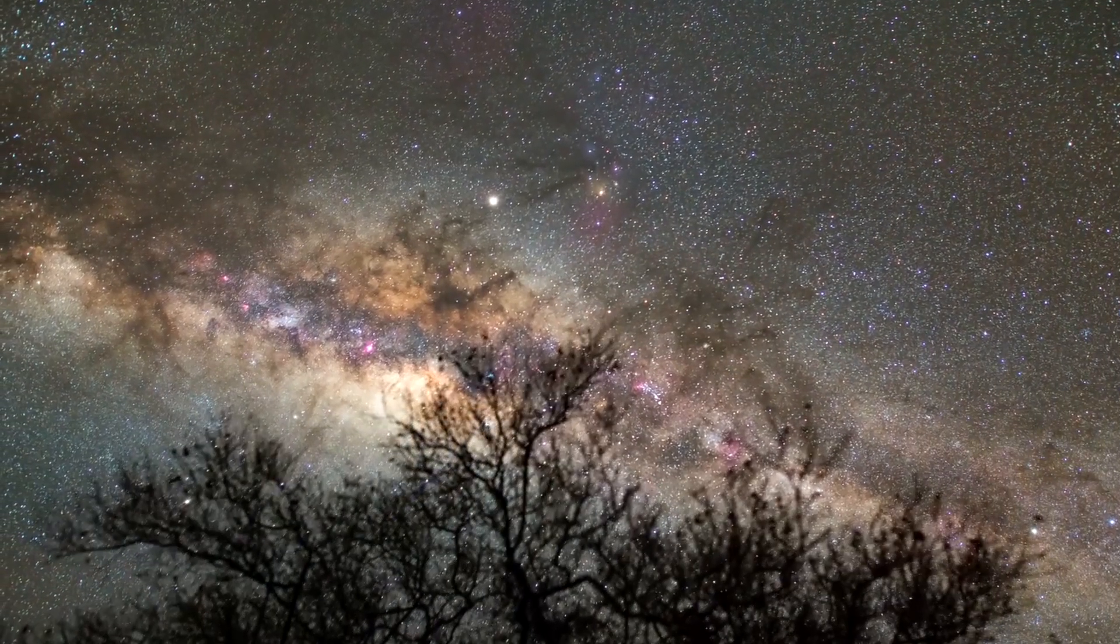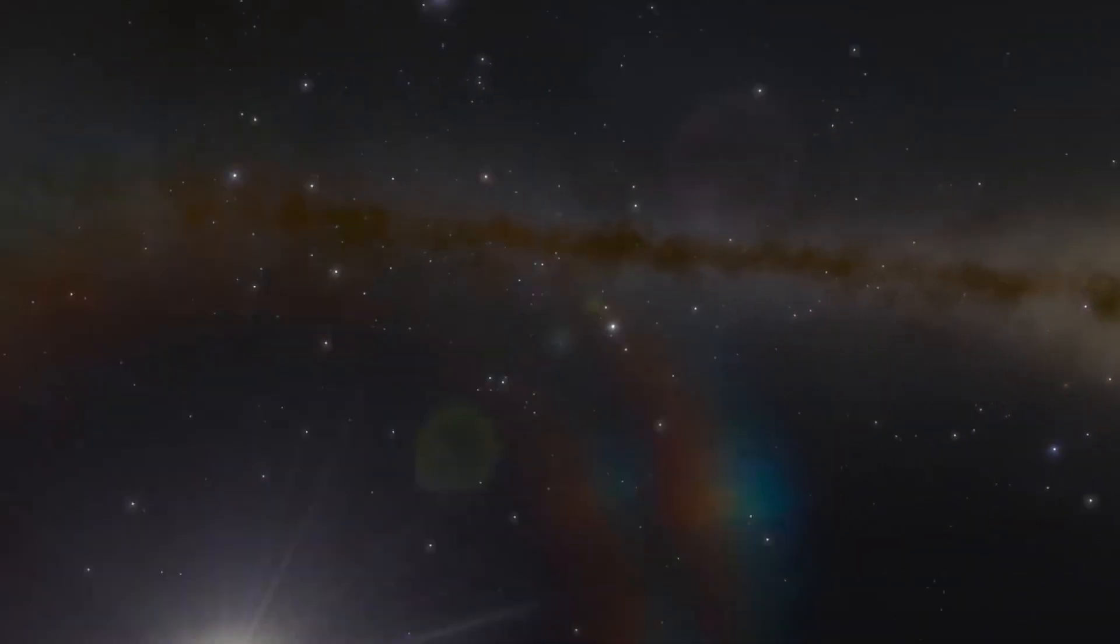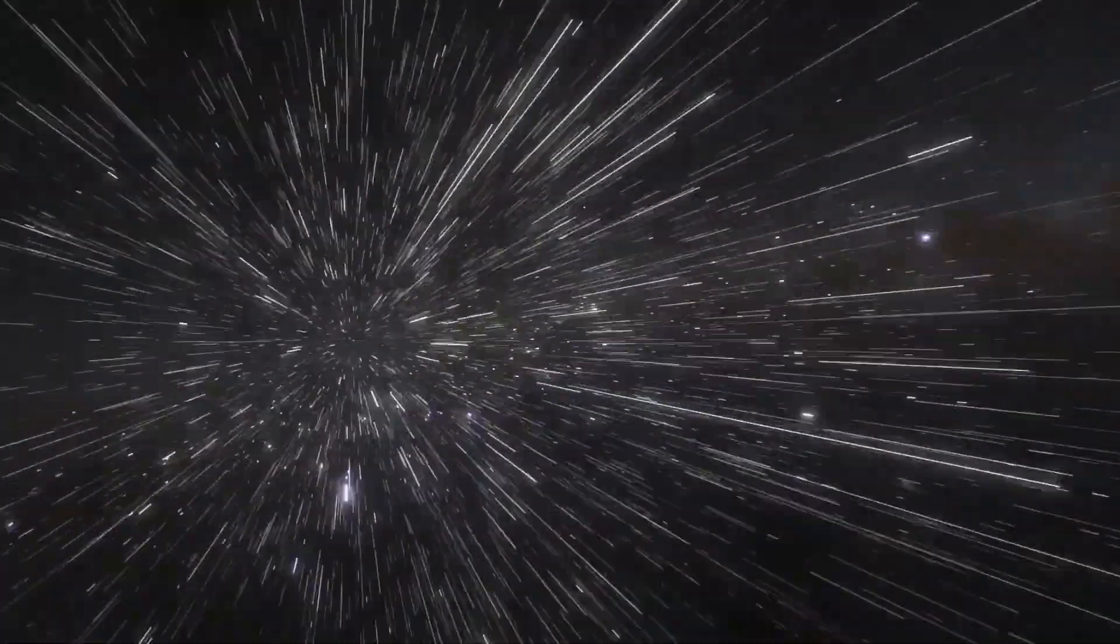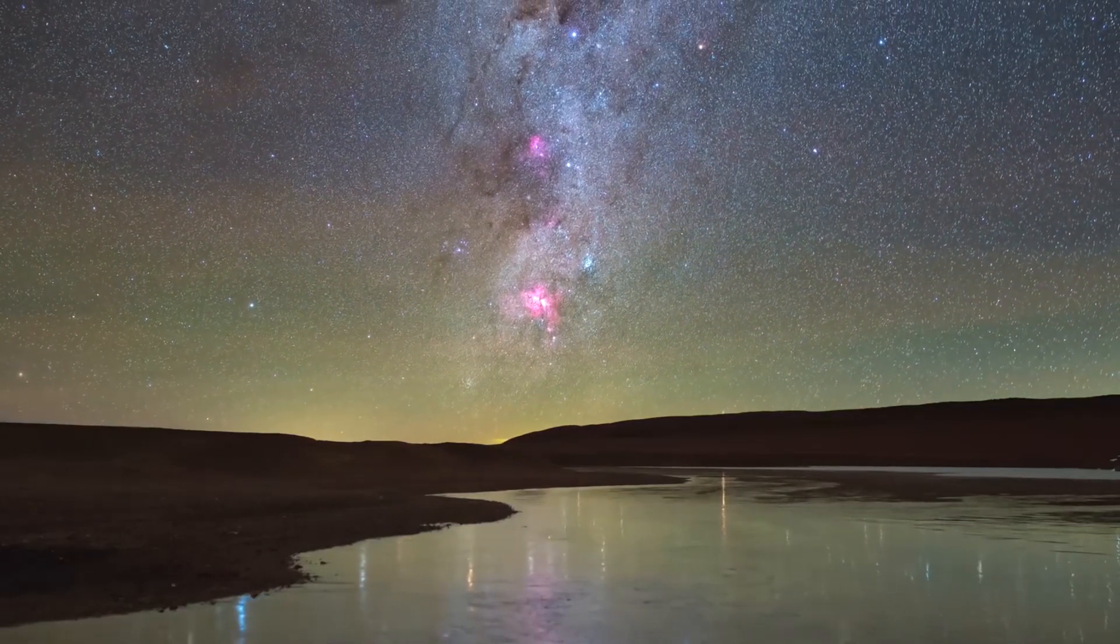Our galaxy is roughly 100,000 light-years across, and we can only see about 6,000 light-years into the disk in the visible spectrum. Still, when light pollution is not significant, the dusty ring of the Milky Way can be discerned in the night sky. The thickness of the dust deflects visible light.